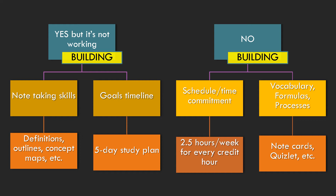If the student has study skills that aren't working, or no study skills at all, both cases are building. You'll check building on the paperwork each session. This means you're going to build a new framework of study skills with the student. If they do have a framework that isn't working, it may take some convincing to let go of their existing approach. Concentrate on their note-taking skills — do they do an outline, can they do an outline, or do they need to draw a diagram?